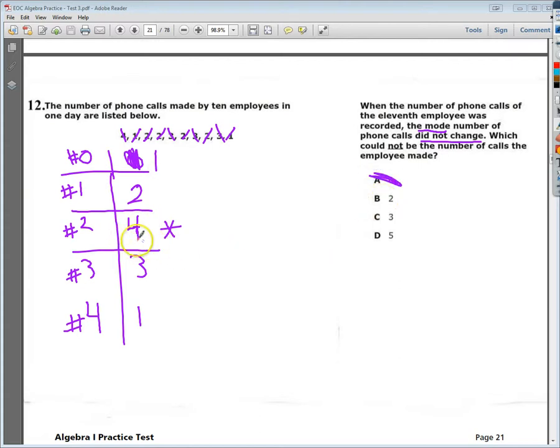If I add a two to the equation, I add another two here, so this number goes up to five. It's still the mode, so it doesn't change anything.